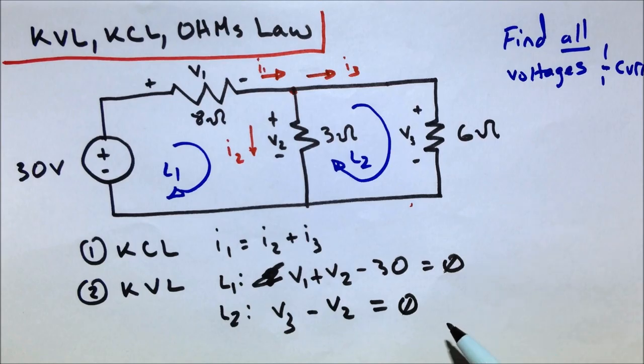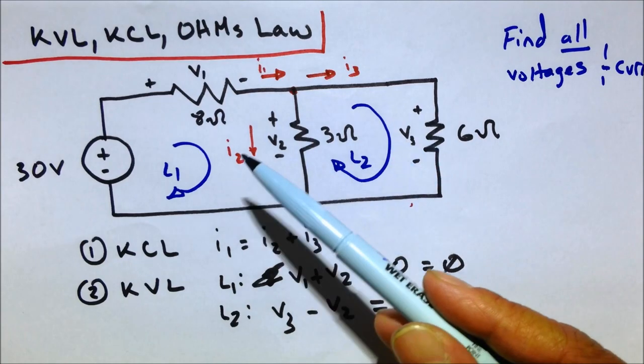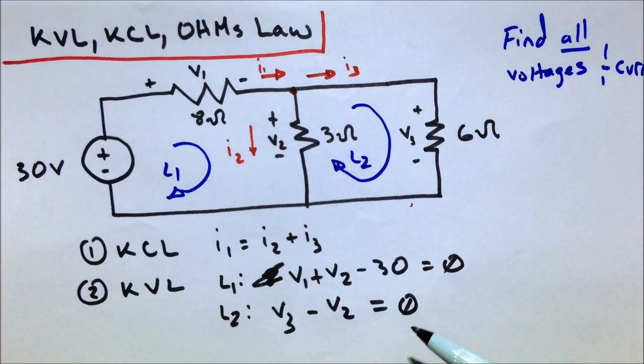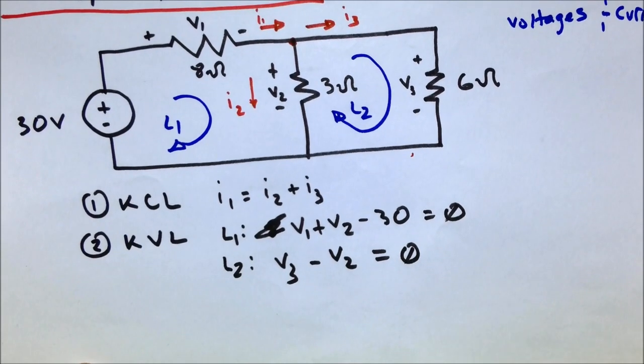Well, do we have enough to solve for all our variables? No, we only have three equations and we have like six variables here. So what else do we know? What other equations can we write, or relationships can we write about? Well, luckily, hopefully you know Ohm's law.